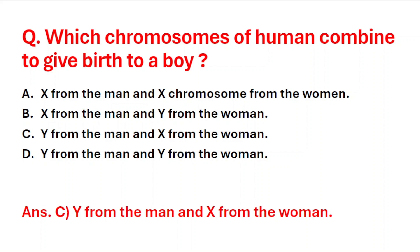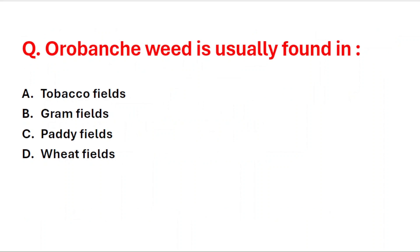Next question: Orobanche weed is usually found in — A: tobacco field, B: groundnut field, C: paddy fields, D: wheat field. Orobanche weed is usually found in the tobacco field.